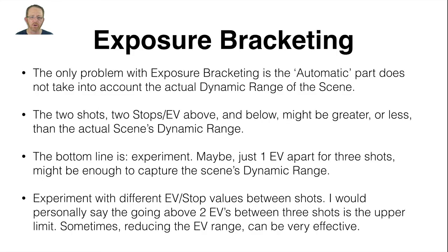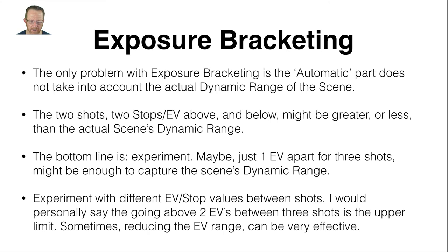The only problem with exposure bracketing is the automatic part does not take into account the actual dynamic range of the scene, so it could possibly exceed six stops of range. The two stops EV above and below might be greater or less than the actual scene's dynamic range. The bottom line is experiment — maybe just one EV apart for three shots might be enough to capture the scene's dynamic range, so it doesn't create that overly bright or glowing HDR effect. Experiment with different EVs between shots. I would personally say going above two EVs between three shots is the upper limit, though sometimes reducing the EV range can be very effective. Keep it to six stops maximum between all three shots.